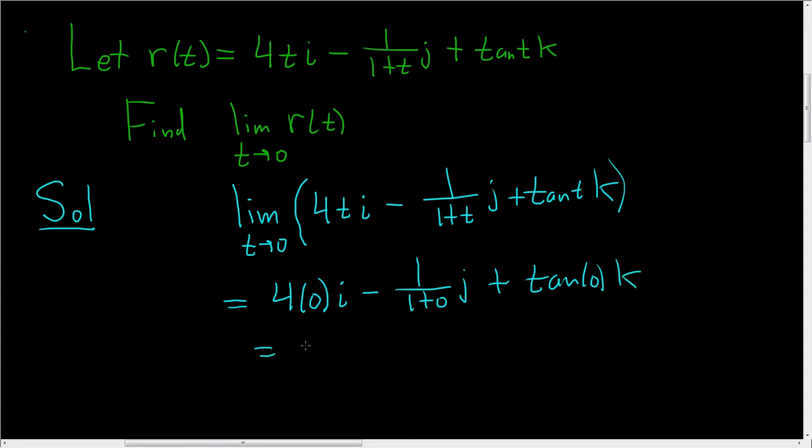4 times 0 is 0, so we get 0i which is just 0. Here we get 1j, so just j, and the tangent of 0 is 0, so we get 0k. The answer is just minus j.